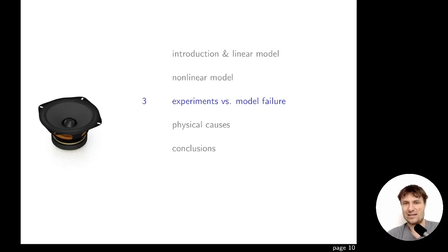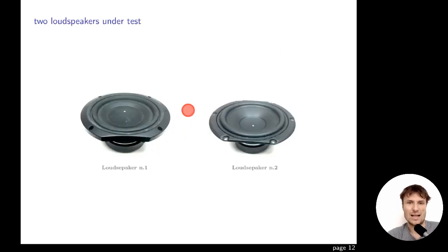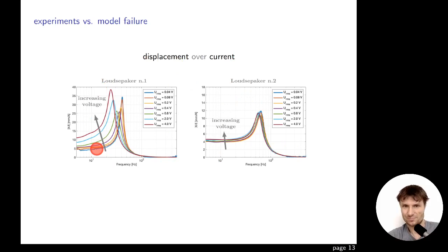When I did experiments, I used a very basic simple setup with a vibrometer measuring displacement and also measuring current and voltage. I used two loudspeakers of similar size — loudspeaker number one and loudspeaker number two. When I plotted displacement over current as a function of frequency for both loudspeakers, we can see some interesting results.